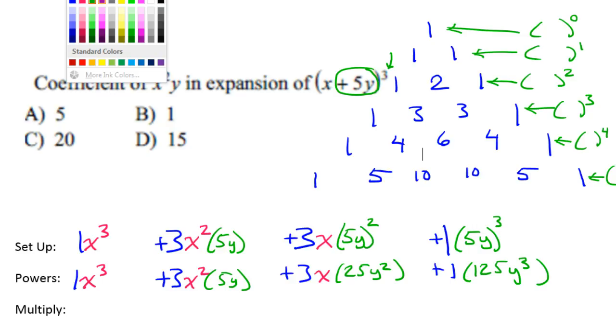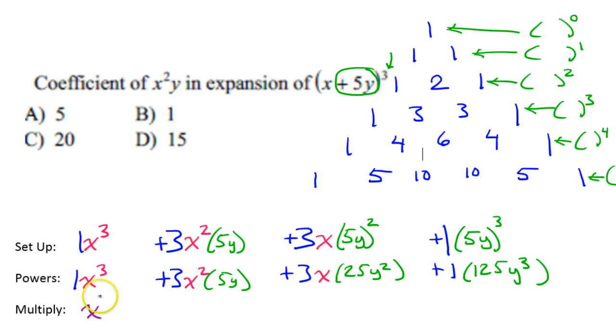Now it's time for the third and final step, which is to multiply. So this will just be x to the third power, but now I've got 3 times 5, so I'll put 15x squared y. Now 3 times 25 is 75, so I will have 75xy squared. And then of course 1 times 125 is just 125y to the third power.